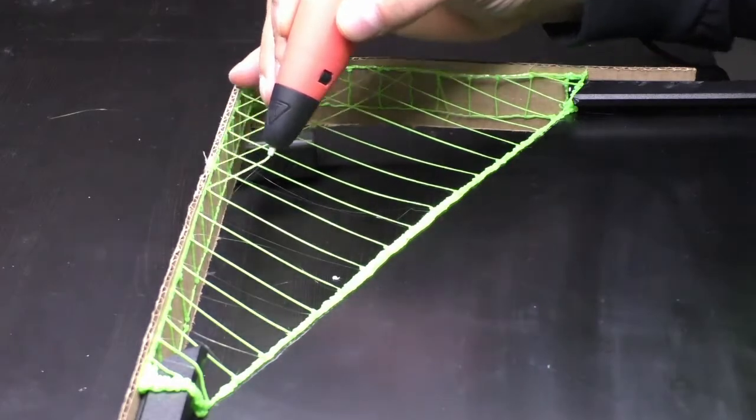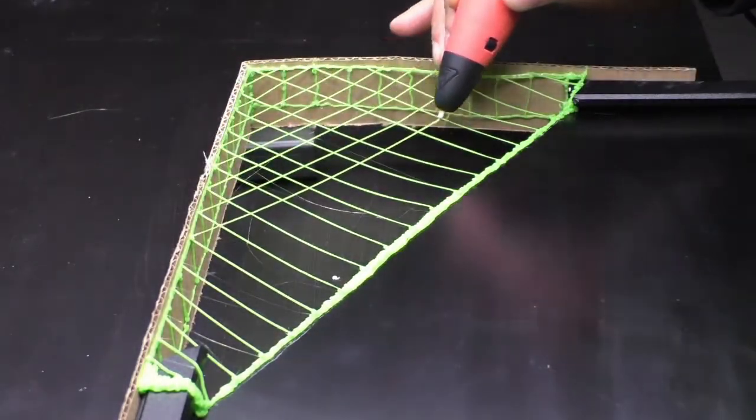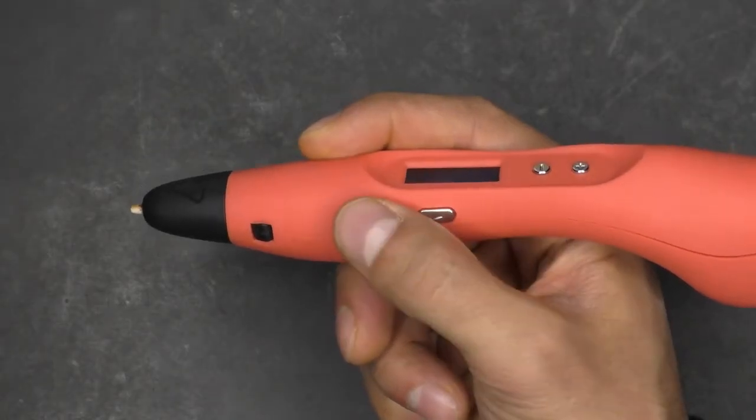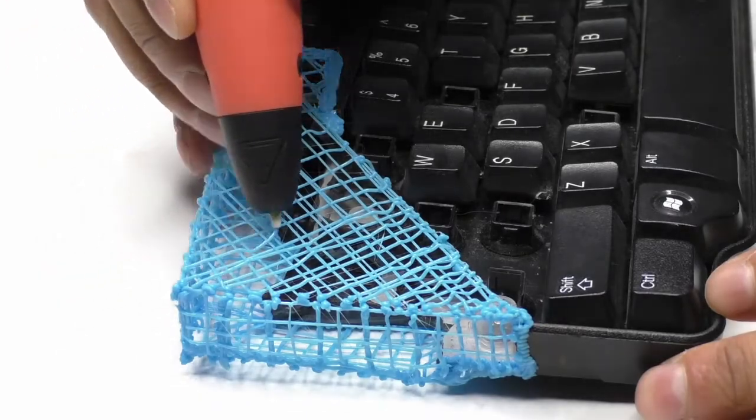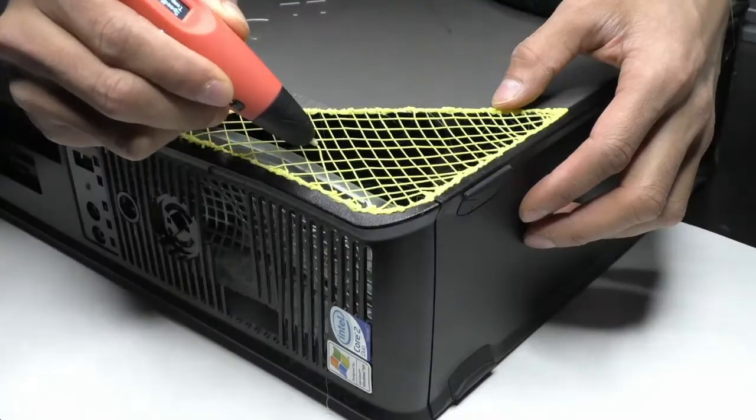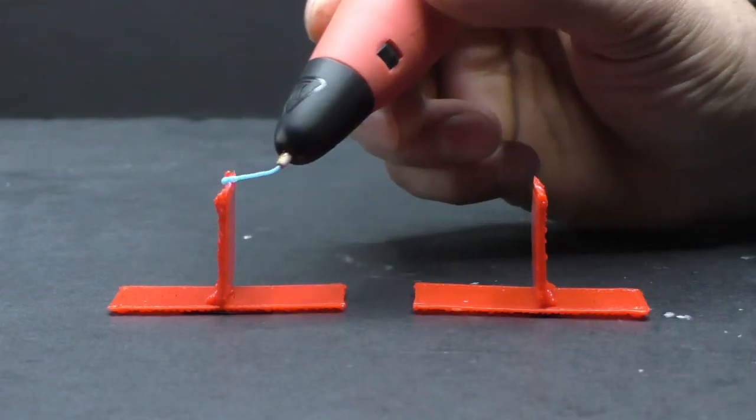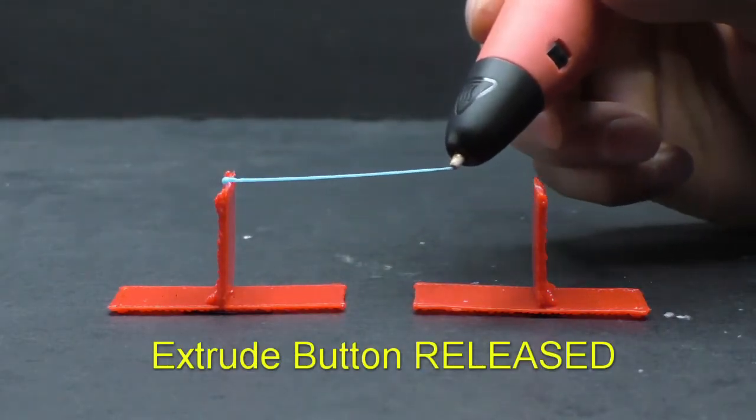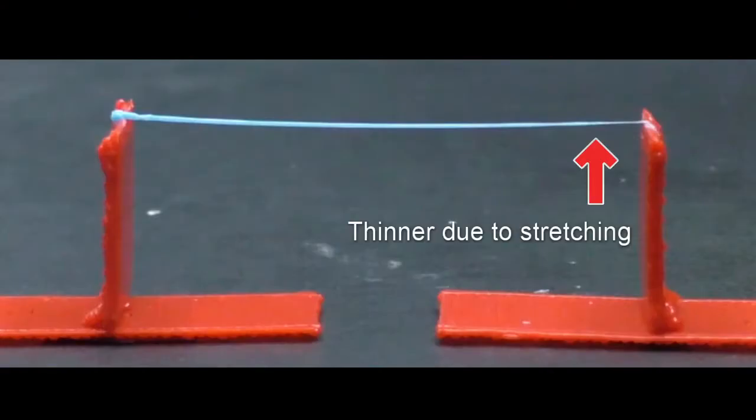The next option I'm going to talk about was one of the keys to greatly improving my bridging. So wake up! That key is that you have to release the extrude button before reaching the end of your bridge. This is a little tricky to show, so for the next clip, the pen sound is going to be on, so pay attention to that. You can see I released the extrude button about halfway. The rest of the way the filament's just stretching.